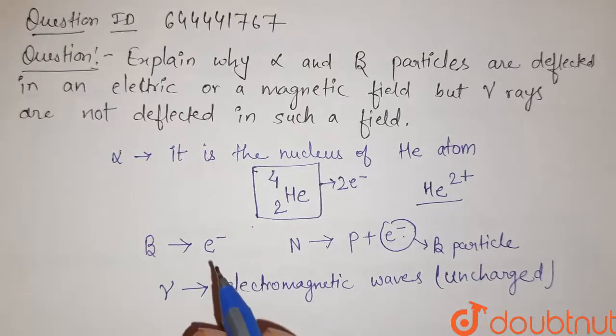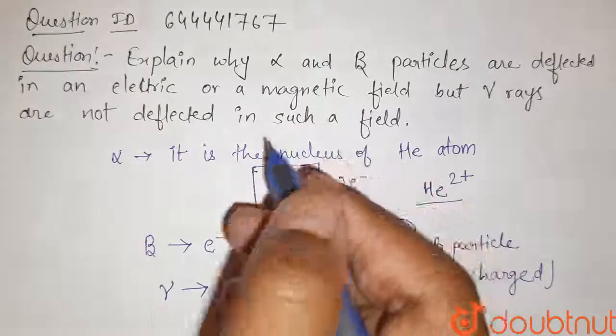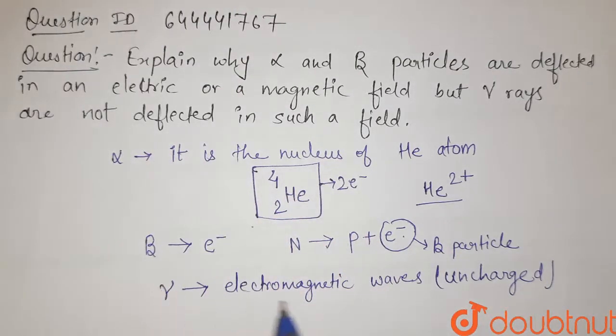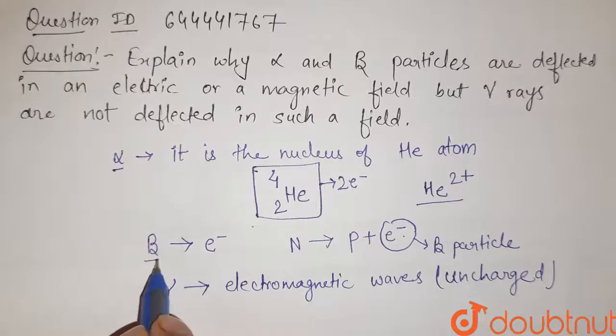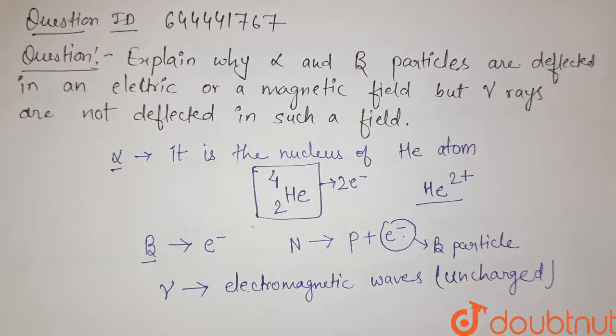So when charged particles enter into electric or magnetic field, they feel deflection. But gamma rays are uncharged. Therefore, they do not feel deflection in such field. But alpha and beta particles feel deflection because they are charged particles. That is our solution. Thank you.